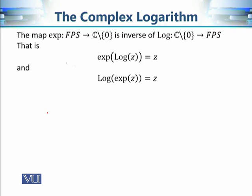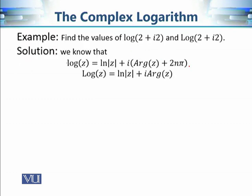Therefore the exponential map, when restricted to the fundamental period strip, is the inverse of the principal logarithmic value. We have proved this by calculating both compositions. Using this, we have found a single-valued logarithmic function that is also the inverse of the exponential function. Now let's calculate a simple example: the value of the logarithm and the principal value of the logarithm of the complex number 2 + 2i.